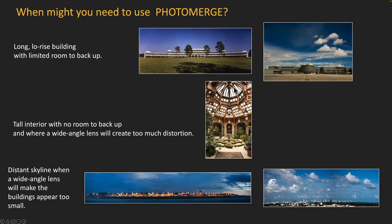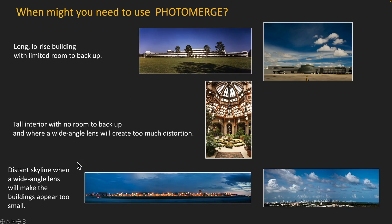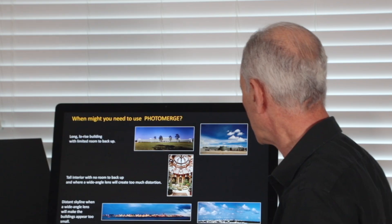Another one is if you have a really tall interior and if you put a wide-angle lens on that you're going to get really distorted architecture overhead, not enough room to back up and zoom in. And then the last situation is where I have to shoot a distant skyline something that's a couple of zip codes away and it's really wide, and again if I put a wide-angle lens on it I get this skinny little line of buildings and you can barely see anything.